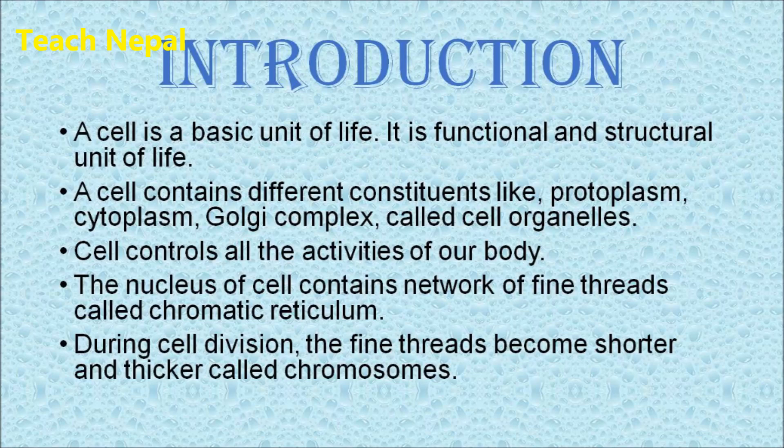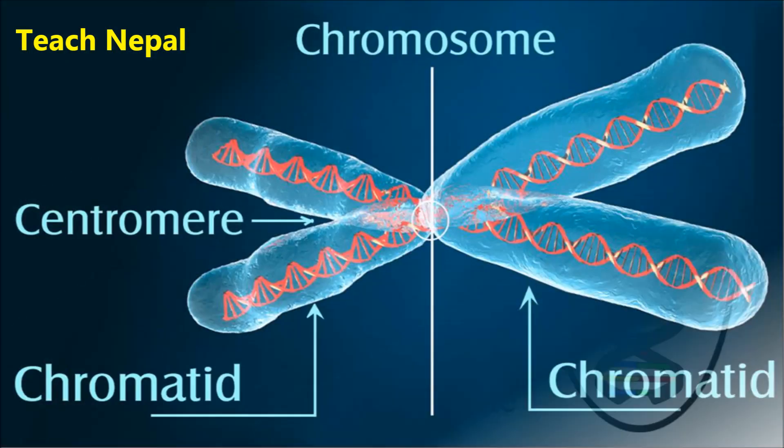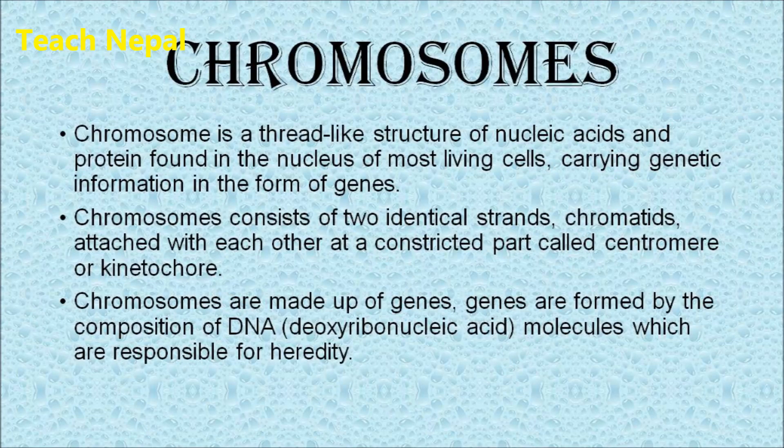When the cell undergoes cell division, the chromatin reticulum becomes thicker and shorter, and these are called chromosomes. Chromosomes can be defined as thread-like structures of nucleic acids and protein found in the nucleus of most living cells. They are responsible for carrying genetic information from parents to offspring in the form of genes.